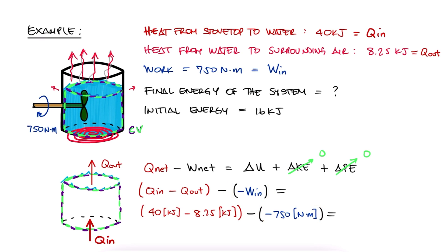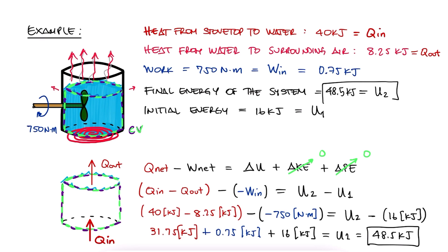So, W is equal to minus 0.75 kilojoules, so when we substitute it in the energy conservation equation, we keep both negative signs. And finally, the change in internal energy is the final energy, or U₂, minus the initial energy, or U₁. We solve for U₂ to find that the final energy of the system is 48.5 kilojoules.